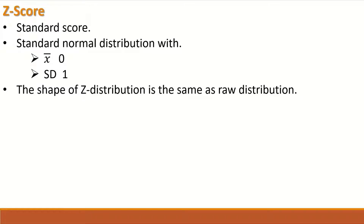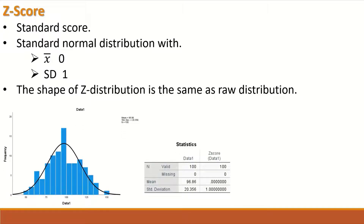When raw data is transformed into a z-distribution, the shape of the bell curve is similar in both. Here on the left-hand side, a histogram for raw data that are normally distributed with a bell-shaped curve and normal curve inserted. The shape of the curve indicates that the distribution of the data is normal, and this data has a mean — as shown in the stat table — of 96.8 and a standard deviation of 20.3.